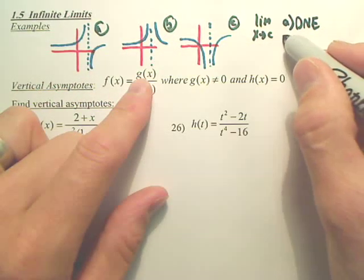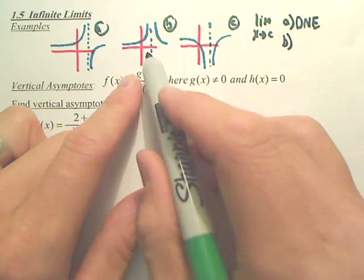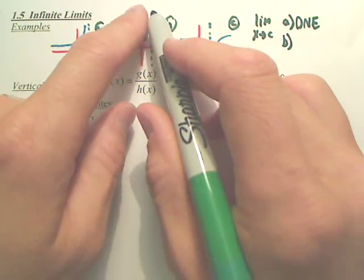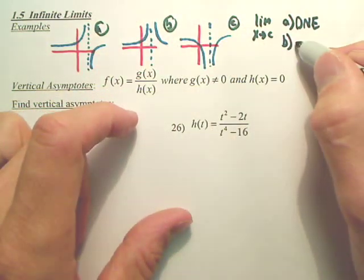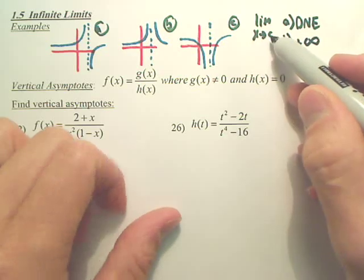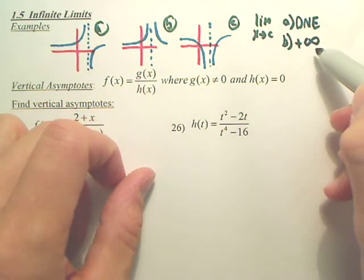Now B, yes, the limit does not exist, but don't they both go to positive infinity? So my answer would be positive infinity, actually. The limit as X approaches that asymptote would be positive infinity. It tells you what the graph looks like.